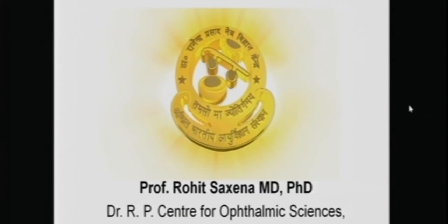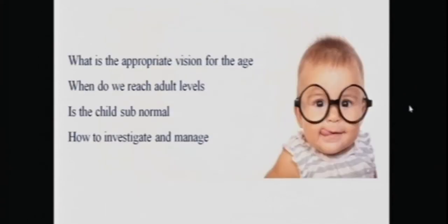I'll be talking on refraction and prescription of glasses. The first question we need to understand is why do we need to know? It's important because it's essential that we understand what is the appropriate vision at any particular age, when does the child reach adult levels, so that we are able to understand whether the child's vision is subnormal or not, and if it is, how do we investigate and manage it?